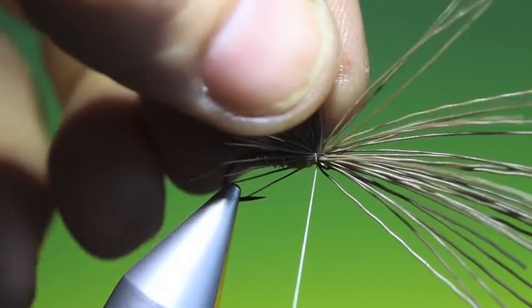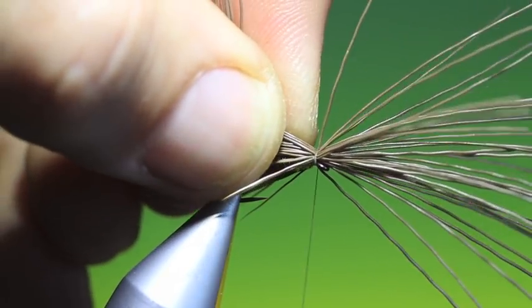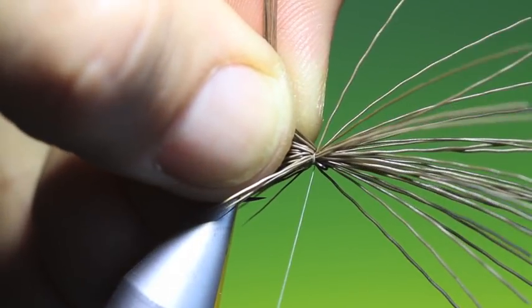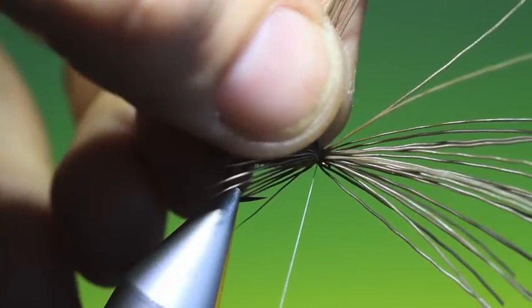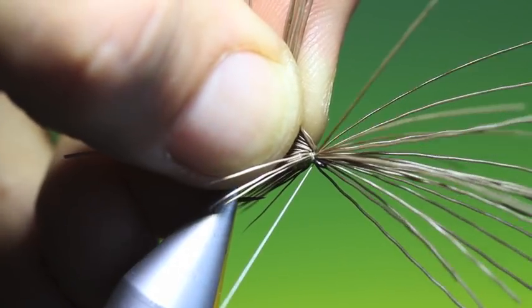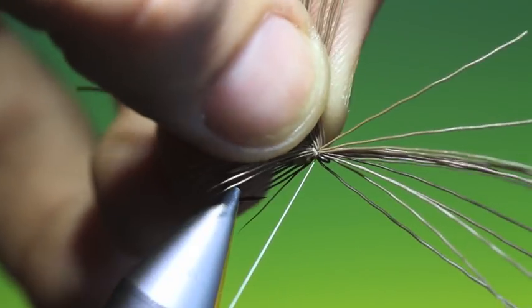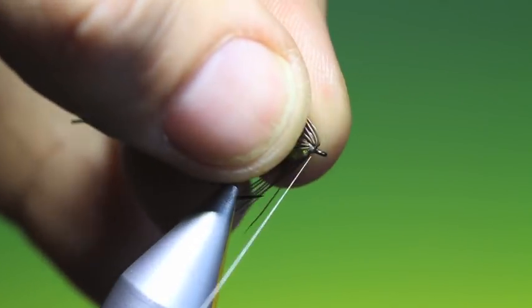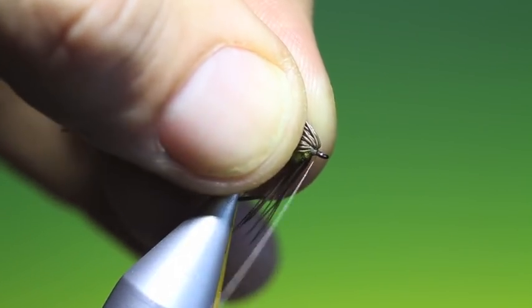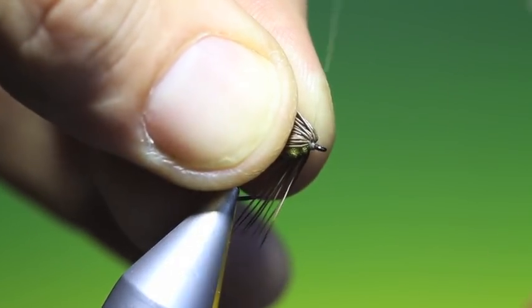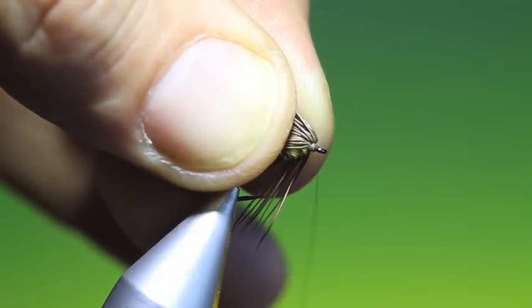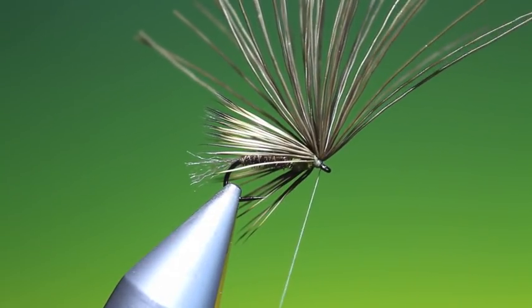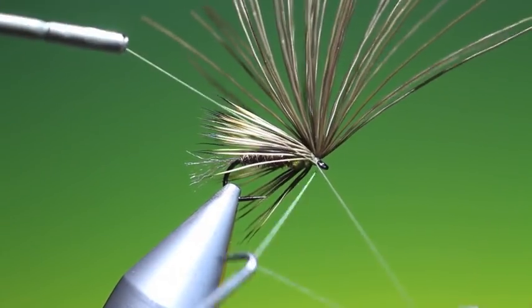And we lift back the fibers, a few at a time, tighten it. Pull them all back, put a stopper in of tying thread just to lift the head. Whip finish.